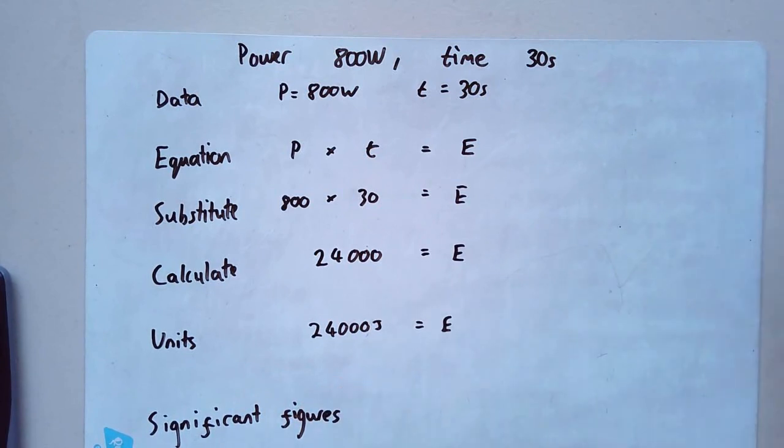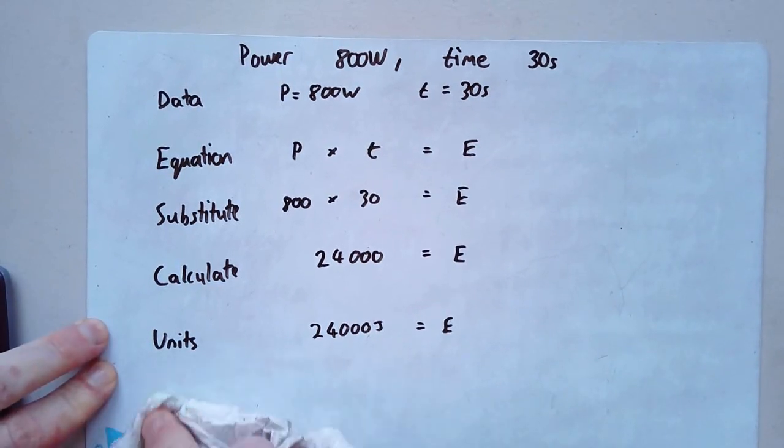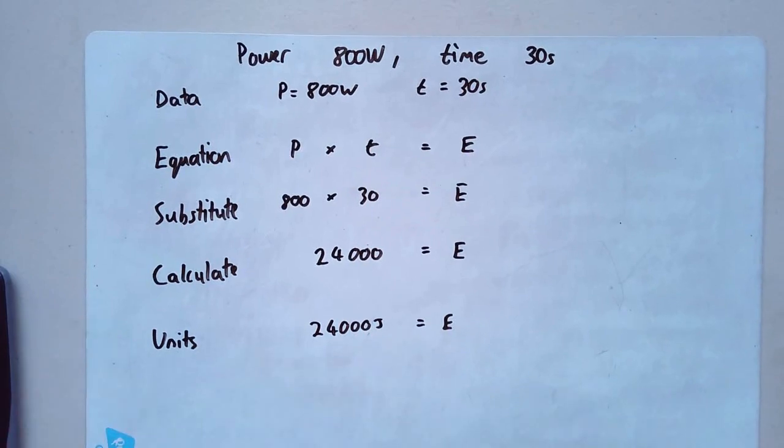We're not going to focus on this one too much right now at this point in the course. Because it depends on whether you've learned about significant figures in maths. And also, there's been a change to AQA in the way that they assess significant figures. So I'm not really going to stress out about it too much at the moment. So I'm just going to leave the S for the minute. And we're just going to have our equation laid out like this.